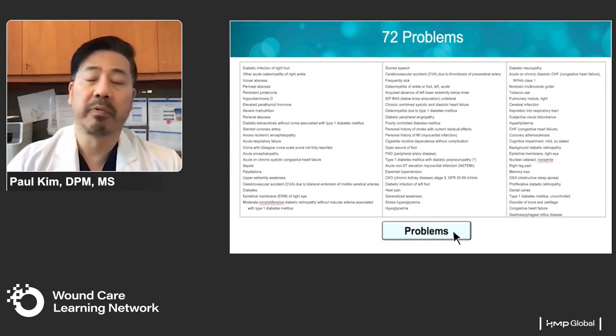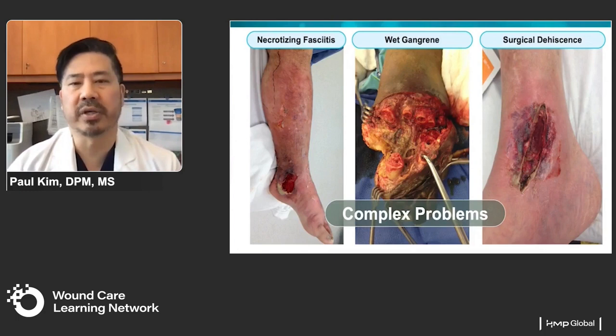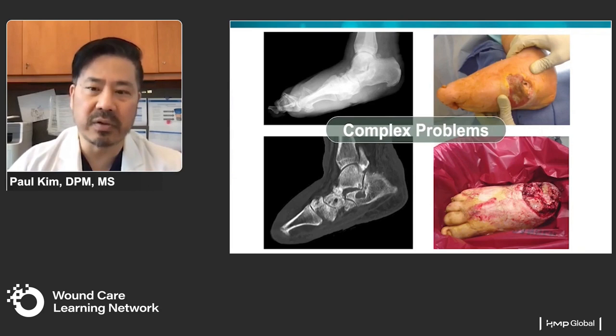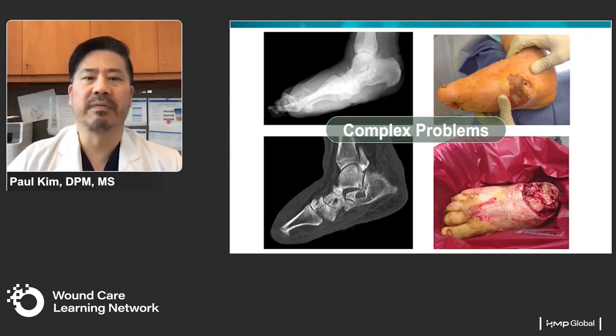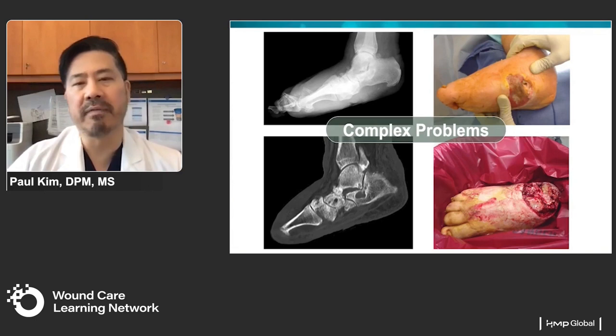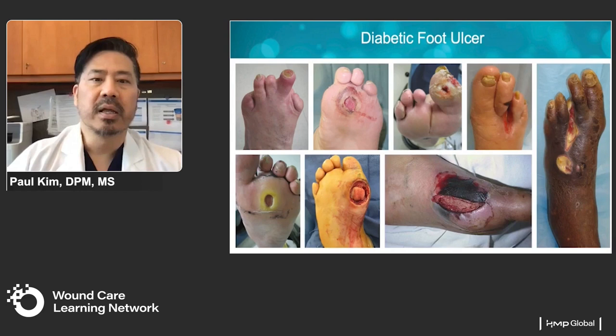One of my patients has 72 problems on the problem list. Wound-related issues like necrotizing fasciitis, wet or dry gangrene, and surgical dehiscence are hard and complex problems, and infection is a major driver. For example, underlying osteomyelitis and soft tissue infection are problems we often can't fully correct — especially in the diabetic foot ulcer. All of these wounds are populated by bacteria, and many often lead to hospitalization in this compromised host.